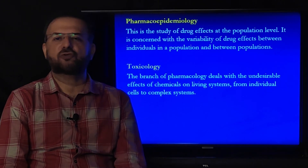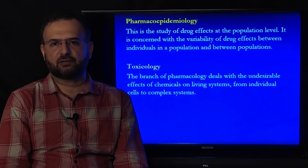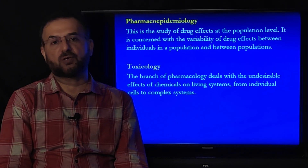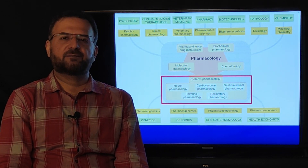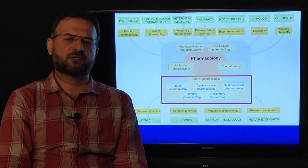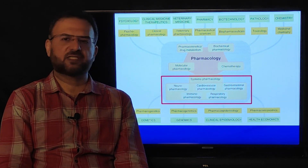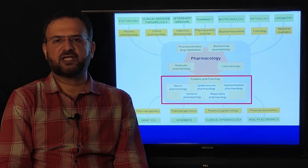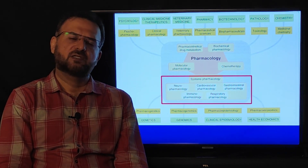Toxicology is a branch of pharmacology that deals with the undesirable or harmful effects of chemicals on living organisms and living systems, from the individual cell to complex systems. There are also different systemic branches of pharmacology: for example, pharmacology of the cardiovascular system for cardiovascular disorders, gastrointestinal pharmacology, autonomic nervous system pharmacology, respiratory disorders pharmacology, and others. Assalamu Alaikum.